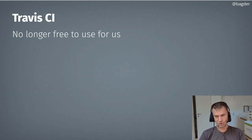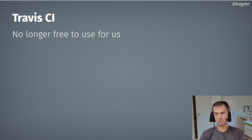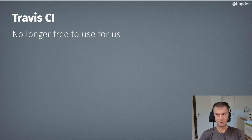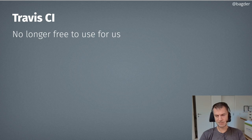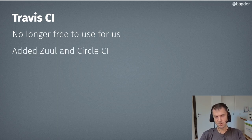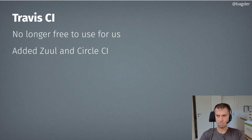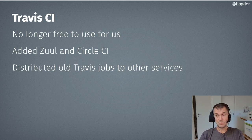We dropped Travis CI because it's no longer free for open source — their promise of 'free for open source forever' wasn't really forever. An open source project couldn't have anyone getting paid to work on it, which I am, so we no longer qualified. The rate was slightly over $200 USD per month that we're now saving. We moved to Zuul and Circle CI, but Zuul did not turn out to be the happy partner we wanted.